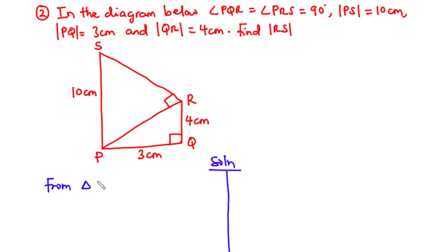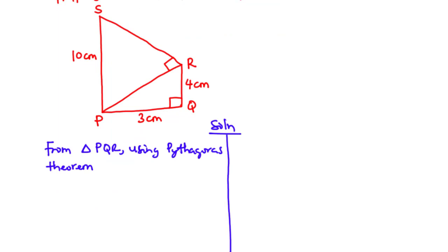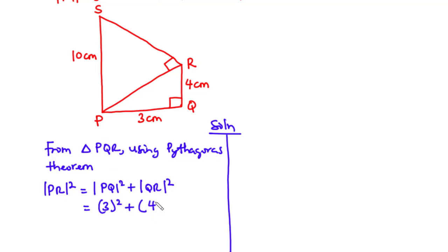From triangle PQR, using the Pythagorean theorem: PR² = PQ² + QR². With PQ = 3 cm and QR = 4 cm, we get PR² = 3² + 4² = 9 + 16 = 25. Therefore PR = √25 = 5 centimeters.